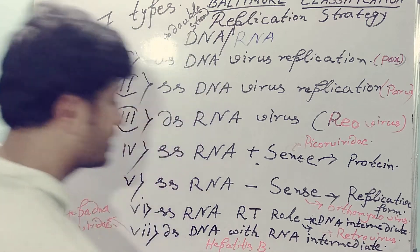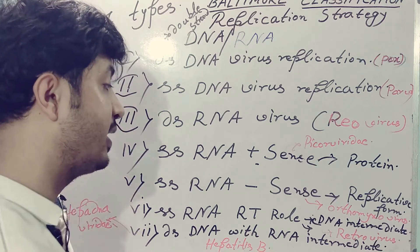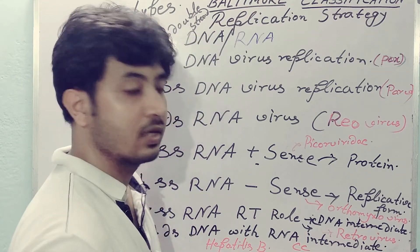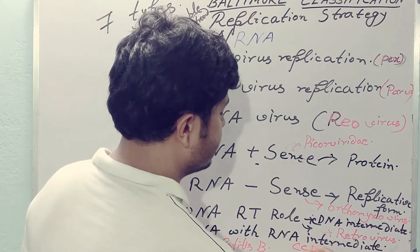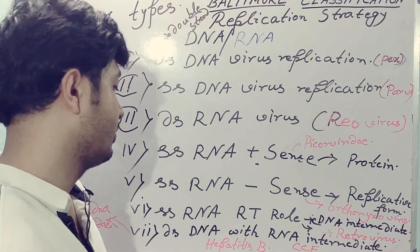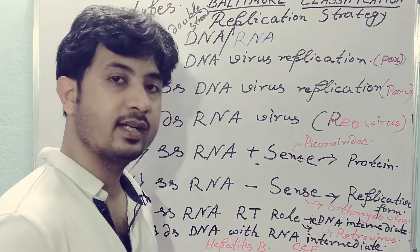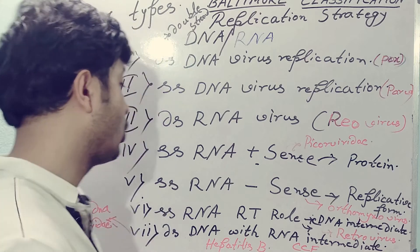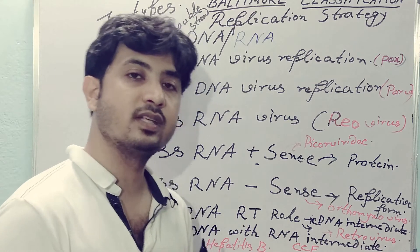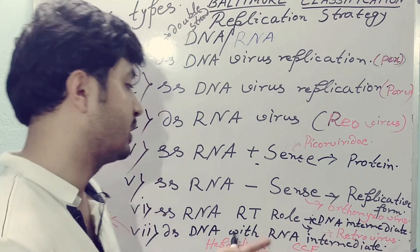Hepatitis B shows this kind of replication strategy, where the genome is double-stranded DNA but it needs an RNA intermediate, where the RNA will form a closed circular form — CCF. In the case of Hepatitis B, the DNA is converted into RNA, and that RNA is used to make copies of the virus genome, that is double-stranded DNA. So that RNA is utilized to make double-stranded DNA as the viral genome.